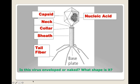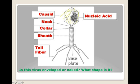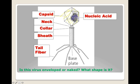This next virus is naked — no lipid bilayer visible. The shape is tricky: it's icosahedral up top but also has a long tail or sheath, making it complex. The capsid runs all the way around the outside, with nucleic acid on the inside, plus a collar, neck, sheath, and tail fibers.